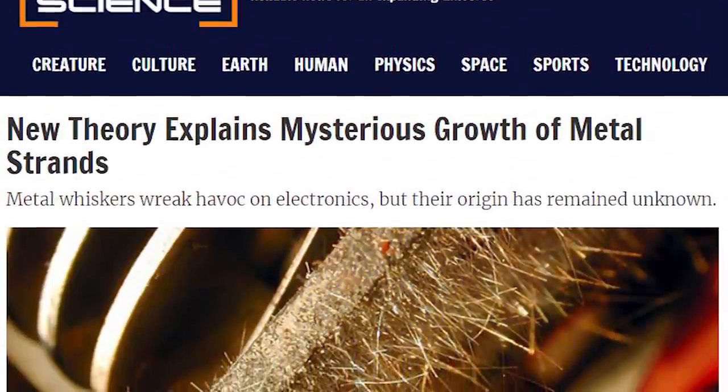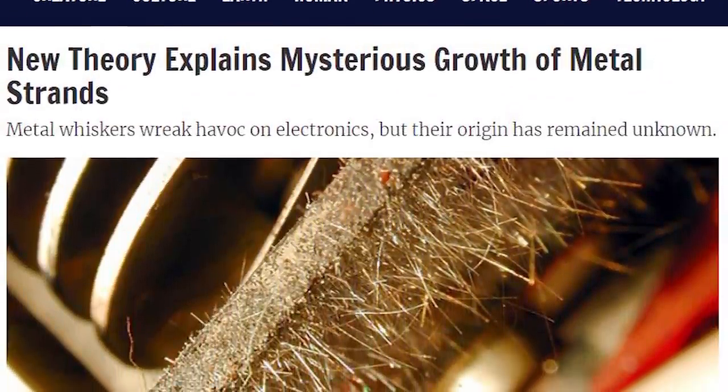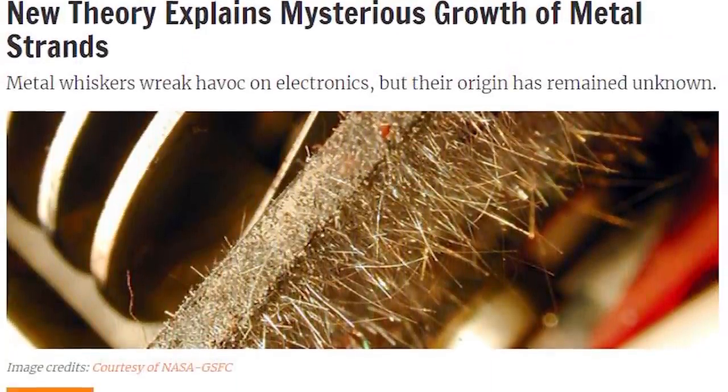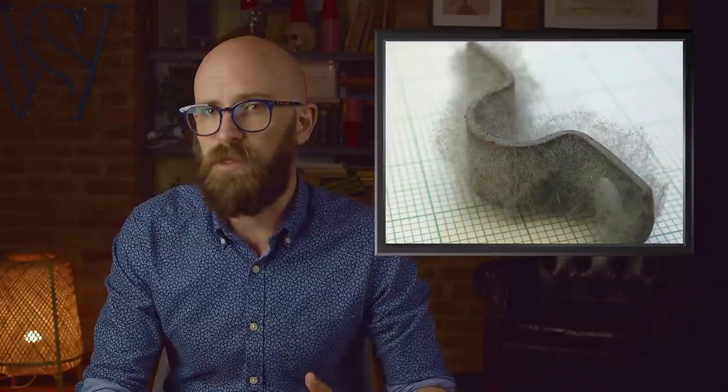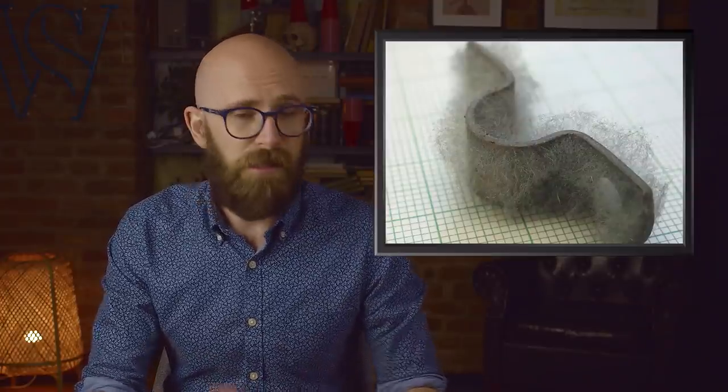These tiny metal whiskers have a habit of building up and causing electronics to malfunction. They were first observed in the Second World War where they were determined to be the root cause of radio malfunctions. To put it in perspective, it's estimated that the damage to this day from whiskers is in the billions of dollars. The whiskers form on many kinds of metal, and when they get long enough they can connect metal components and cause short circuits. It's been theorized that metal stress or electric fields have led to the formation of whiskers, but there's still no definitive answer.